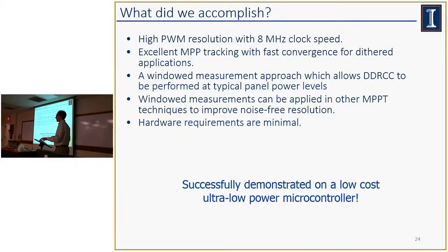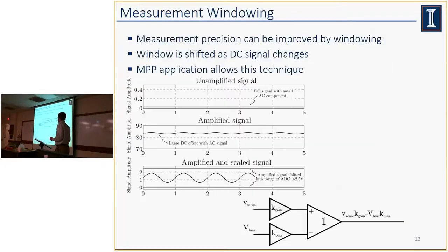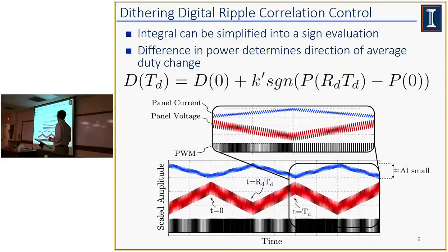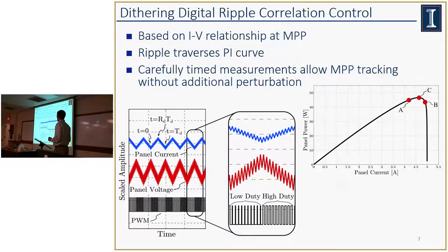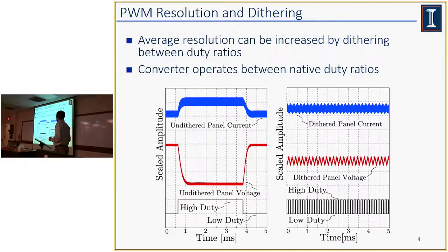Thank you for your time. Any questions? So when you talked about synthesizing a certain duty ratio, how are the high and low duty ratios decided? These are adjacent native duty ratios — so 1/32nd and 2/32nd in this instance. Those are the closest we can get using the native PWM hardware.